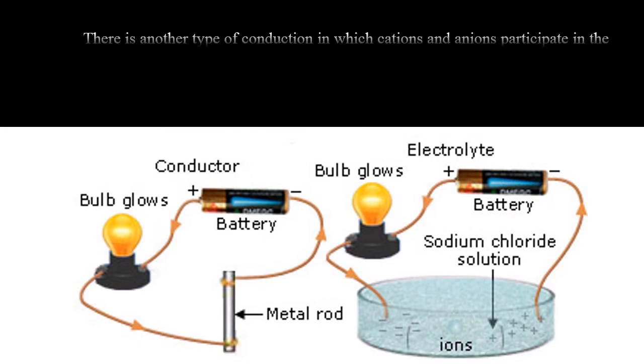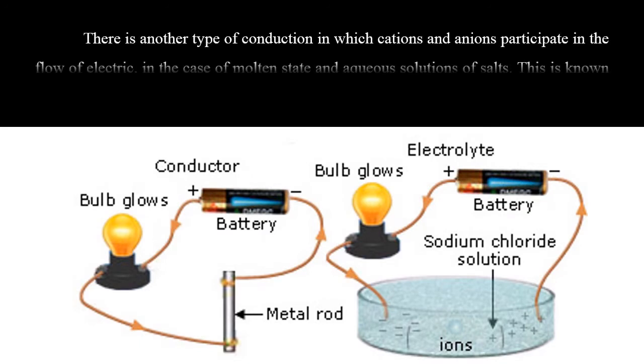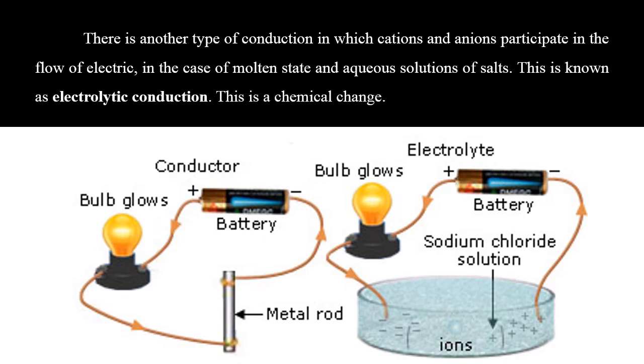You are all familiar with the concepts of cations and anions. There is another type of conduction in which cations and anions participate in the flow of electric, in the case of molten state and aqueous solutions of salts. This is known as electrolytic conduction. This is a chemical change.